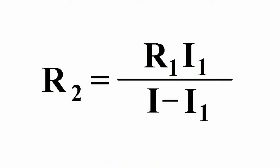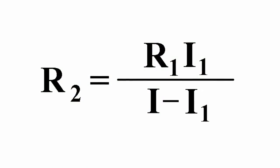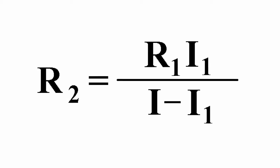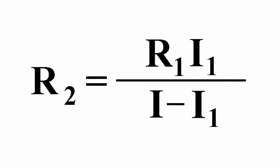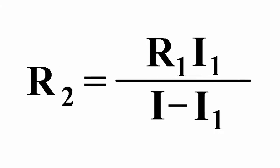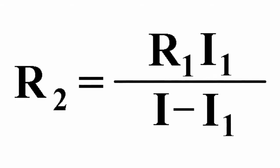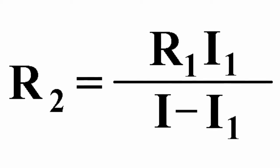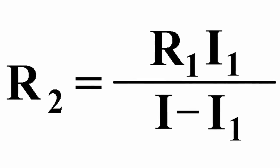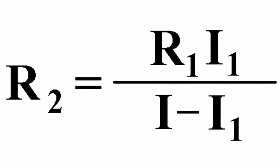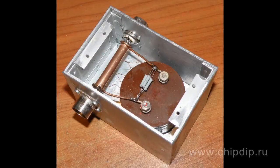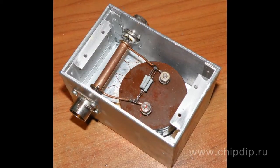For this purpose, we should calculate the necessary shunt resistance using a formula, where R2 is shunt resistance, R1 is ammeter resistance, I is the maximum current corresponding to full deflection of the needle, and I1 is the rated maximum current measured with the ammeter without shunt.